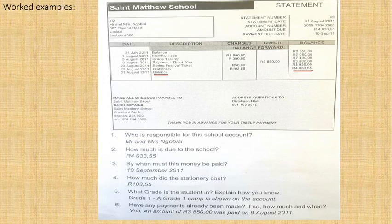When must the money be paid? The money must be paid on the 10th of September 2011. Let's look at where it says that. Under the account statement it says 'amount due' and 'payment due date' - it says there: payment due date, the 10th of September 2011. So that's important.